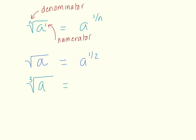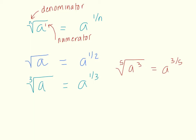If we had the cube root of a, it would become a to the 1 third power, because the exponent is 1 and the index number is 3. If we had the 5th root of a cubed, that becomes a to the 3 fifths power. This is really just a pattern we need to get used to: the numerator is always our exponent, and the denominator is always our index number.